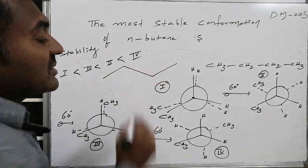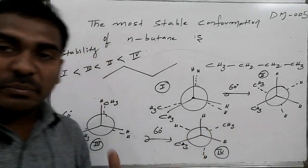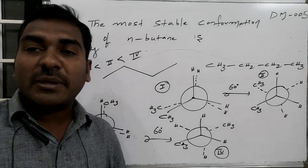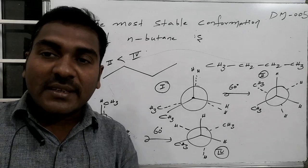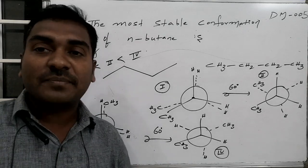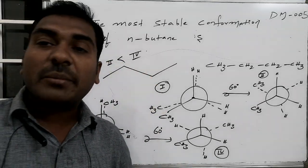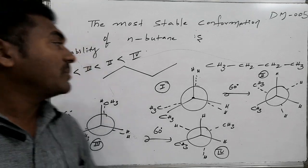this is said to be anti-conformation in which the bulk groups, bigger groups are present with maximum distance of separation by maintaining the reference dihedral angle as maximum. That is 180 degrees. In this case, it is associated with minimum energy. That is maximum stability.